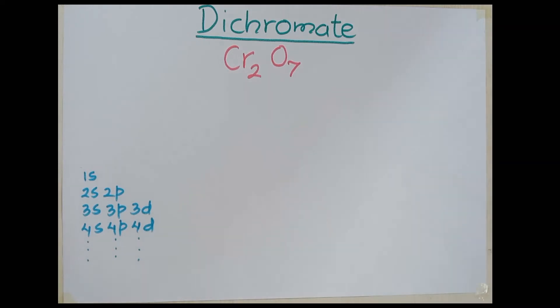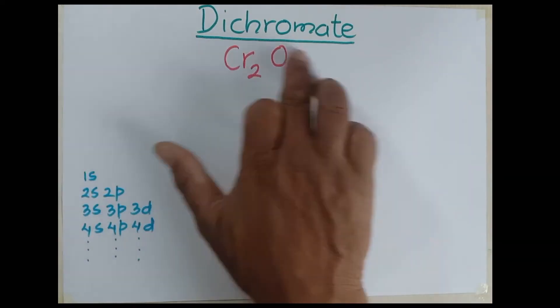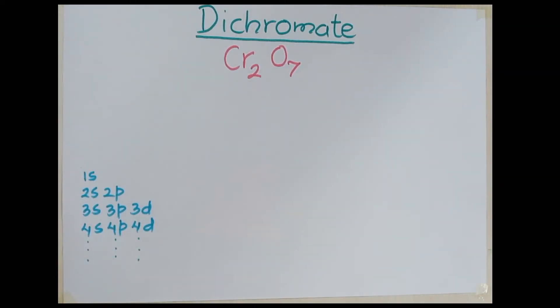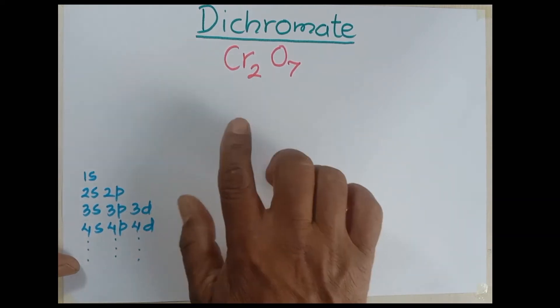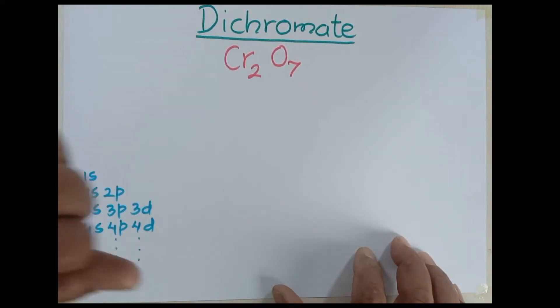For this I want to start with the formula of dichromate, Cr₂O₇. It consists of two chromium atoms combined with seven oxygen atoms. Chromium is a d-block element but oxygen is a p-block element, that's why we have a little problem understanding chromium's valence electrons.